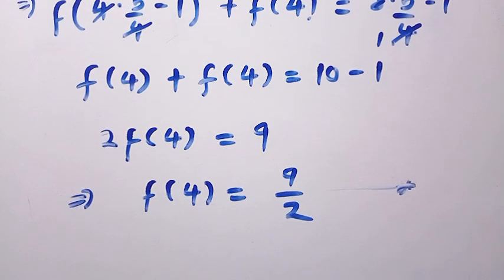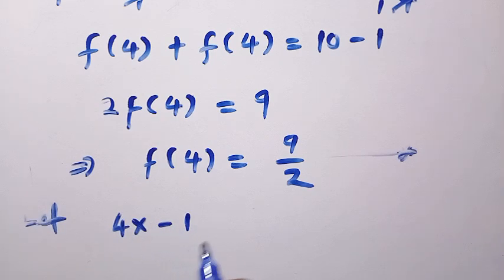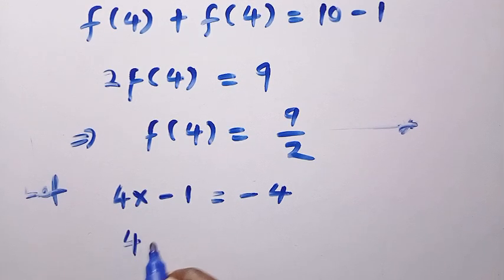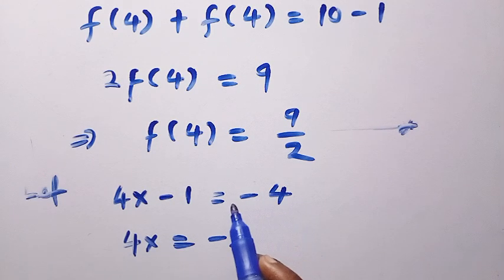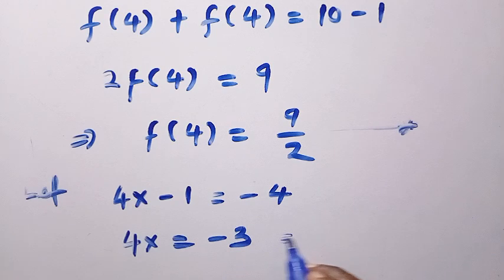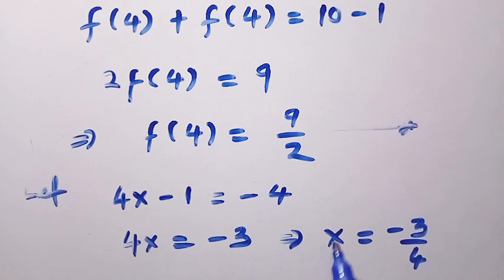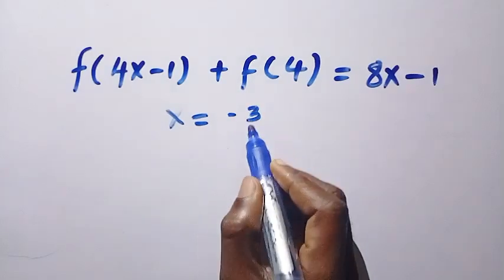After getting f of 4, let's now let 4x minus 1, which is the domain of the first function, to be equal to minus 4. We also make x the subject of the formula. By doing that, we have 4x equals minus 3, because when minus 1 moves to the other side it becomes positive and minus 4 plus 1 is minus 3. So x equals minus 3 divided by 4. Let's come back to the given question and substitute x as minus 3 divided by 4.